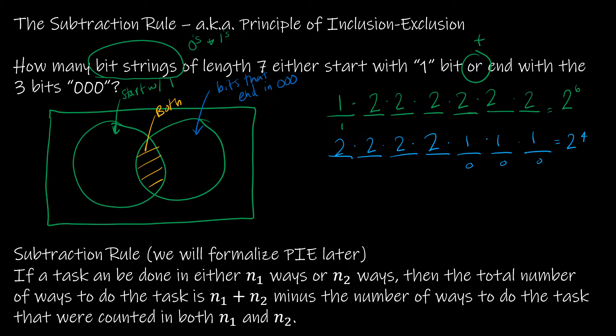And then if I look at anything that was counted in both categories, means I started with a 1 and ended with a 000. There's one option here, one here, one here. And then we have two options for those three guys in the middle. So that's 2 to the 3rd.